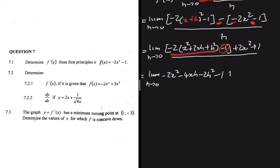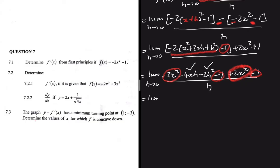Let's not forget the minus 1 out here, and then plus 2x² plus 1, all divided by h. Now notice: -2x² and +2x² cancel, and -1 and +1 cancel. So we're only left with -4xh and -2h², giving us the limit as h tends to 0 of (-4xh - 2h²) divided by h.